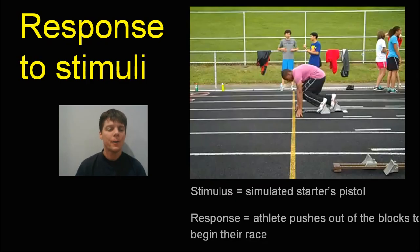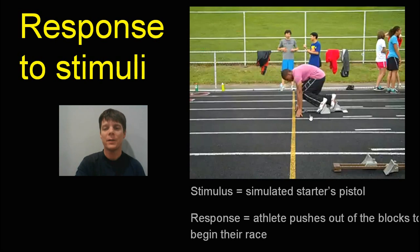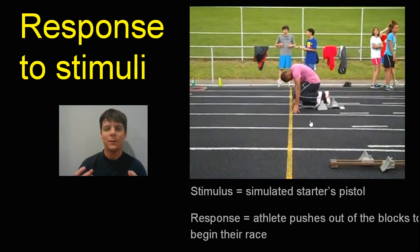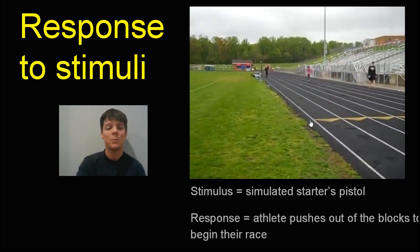Another characteristic of living things is that living organisms are able to respond to external stimuli — events that take place outside of the organism. The example we're going to look at is a track and field athlete who's going to respond to the stimulus of a simulated starter pistol. The response of the athlete after they hear the starter pistol is to push out of the blocks to begin their race. We see the athlete in the set position, the starter pistol sounds, and the runner responds by beginning his race.